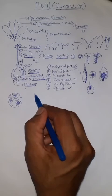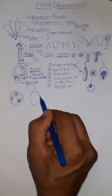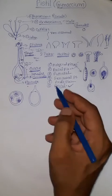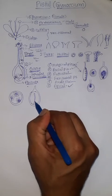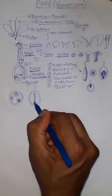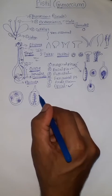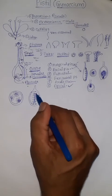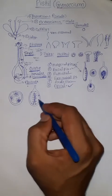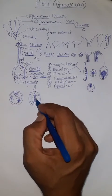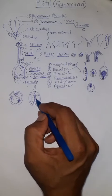Coming to free central placentation, we can better understand it with a longitudinal section of the ovary. Here, we can see one central axis, and on this axis the ovules are attached without any physical contact with the ovary wall. They are freely arranged on the central axis, which is why it is called free central placentation.